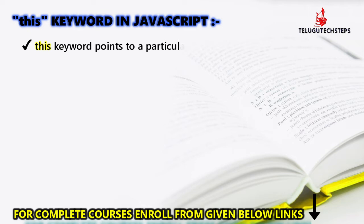So, the 'this' keyword is pointing to a particular object based on the location of this keyword. This is the second point we need to understand.